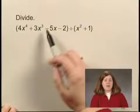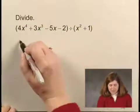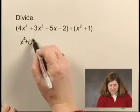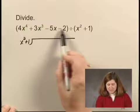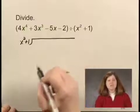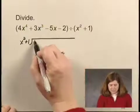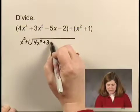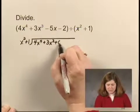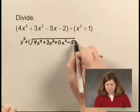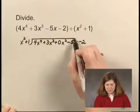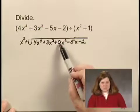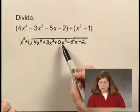So when I write that in the problem, I'm going to take x^2 + 1 into this polynomial. I'm going to write a 0x^2. So I have 4x^4 + 3x^3 + 0x^2 - 5x - 2. And that is there in case I need to subtract from an x^2 term.